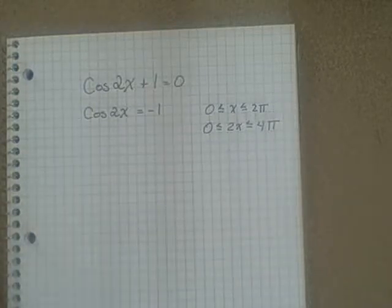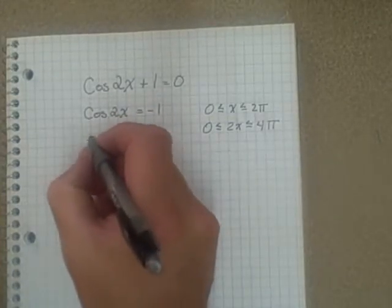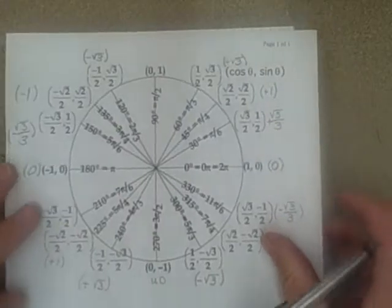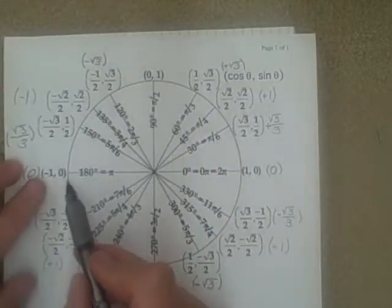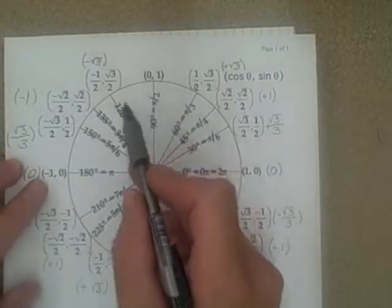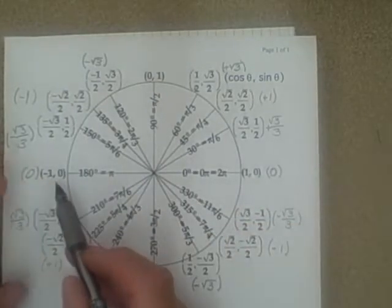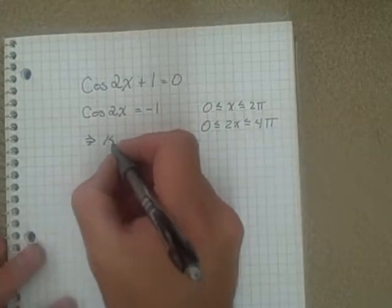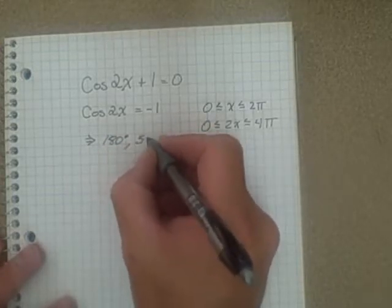So how do we do that? Well, this would then be equal to, look for -1 in the cos area. There it is at 180. That's once around the circle. And then going again, 360 and 180, it happens again. So what's 360 and 180? Well, that's 540. So our two solutions then would be 180 degrees and 540 degrees.